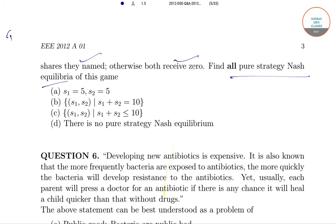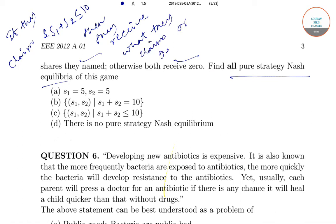So in this game, if they claim like this, that is S1 plus S2 less than equal to 10, then they receive what they claim or get 0. Now here, one may be tempted to say the Nash equilibrium is 5,5. But hold on.